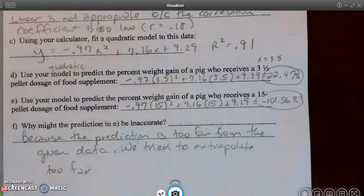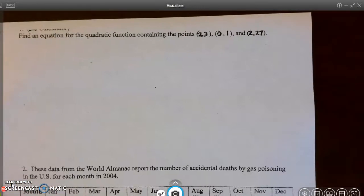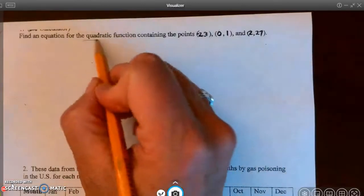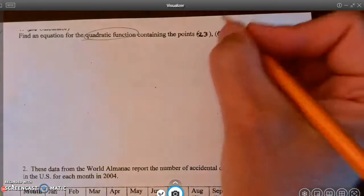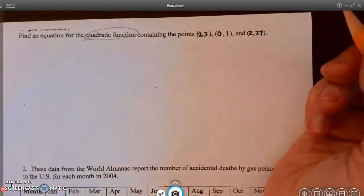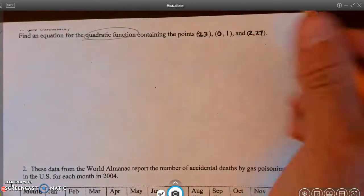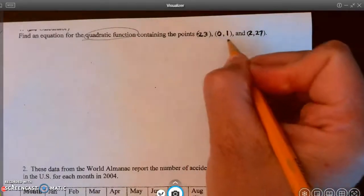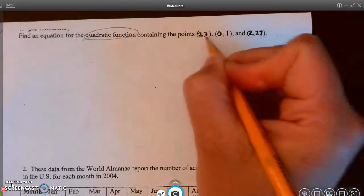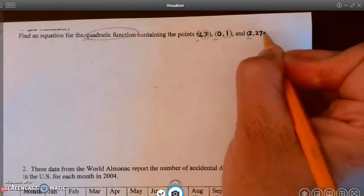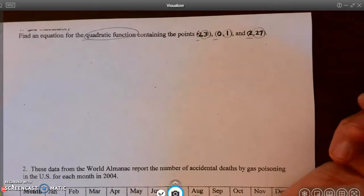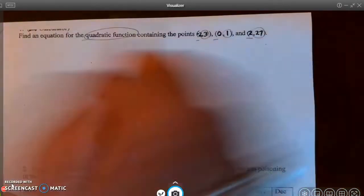All right. This next example asks us to find an equation for the quadratic function containing these three points. So all we need to do is we need to go to our calculator. And negative 2 and 0 and 2, these are my x-coordinates. We'll put those in L1. 3, 1, and 27. We'll go in L2. We'll choose quadratic model. And we'll find our equation.